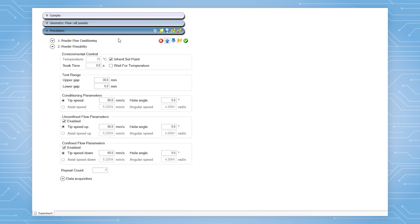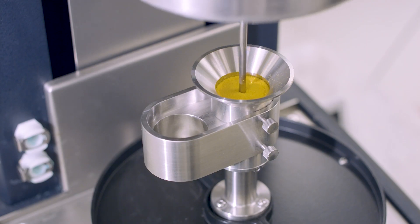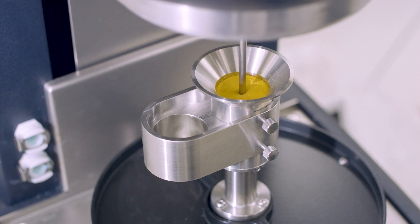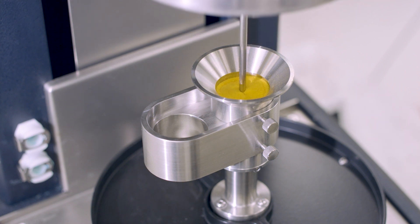The conditioning step is used to provide a well-defined loosely packed initial condition. Conditioning is achieved by stirring the powder downwards and then upwards at a set tip speed.